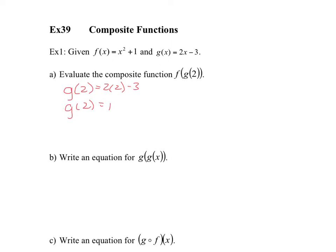What that means is when x equals 2, the function g has a y value of 1. So right now we're going to replace this g of 2 with our value of 1, because g of 2 is equal to 1. So now what I have is f of 1, and I'm replacing x equals 1 into my other function f. And that's simply 2. Therefore, f of g of 2 is equal to 2.